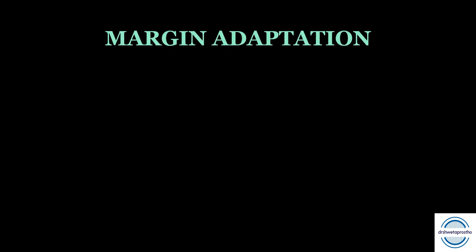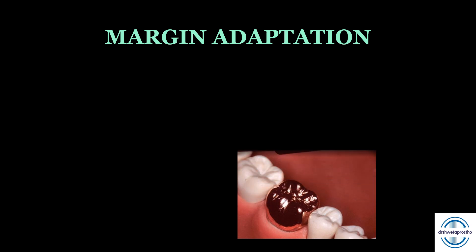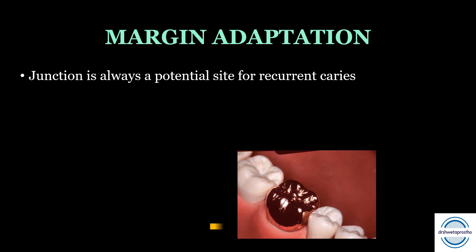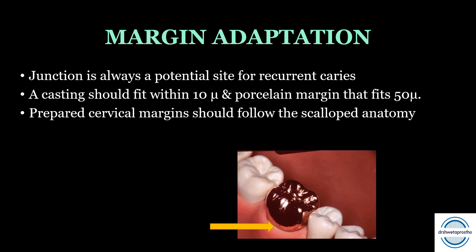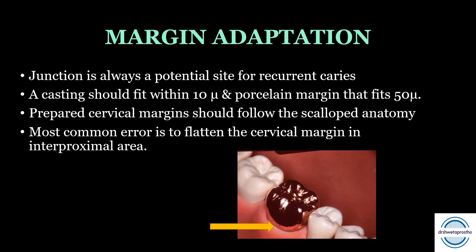Next is margin adaptation, which is very important for biological principles. The margin is the junction which is always a potential site for recurrent caries because of dissolution of cements. It is very important that it is completely and nicely adapted. A casting has to fit within 10 microns and a porcelain margin should fit within 50 microns. The prepared cervical margin should always follow the scalloped anatomy of the alveolar bone, the attachment, and the gingival tissue — it should not be flattened. The most common error is to flatten the cervical margin in the interproximal area, which violates the biological width.